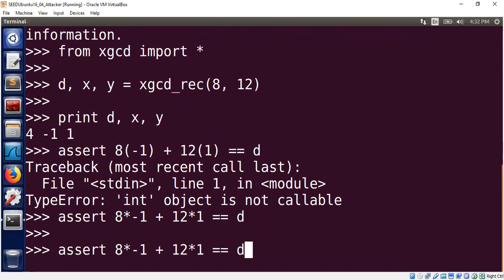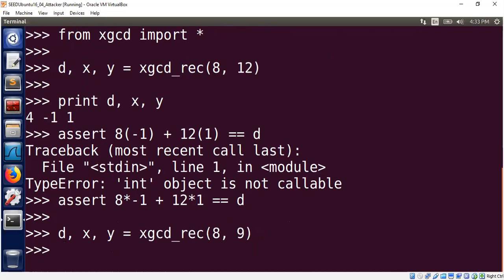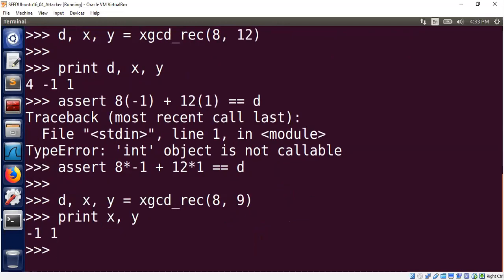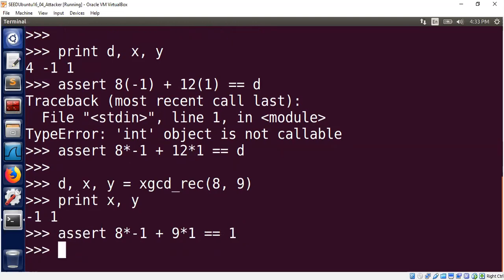So we can convince ourselves by trying something. For sure we know D is 1 in this case for 8 and 9, they're coprime. So D must be 1 and what about X and Y? X is minus 1 so 8 times minus 1 plus 9 times 1 must be equal to 1. Yeah, that's pretty much it.